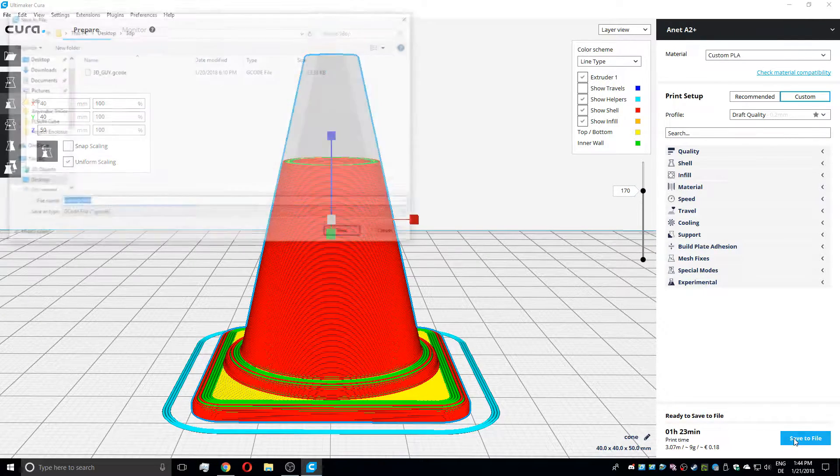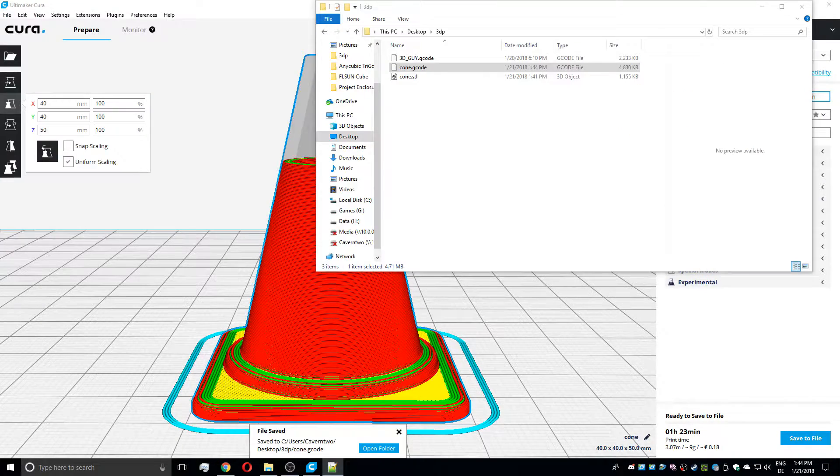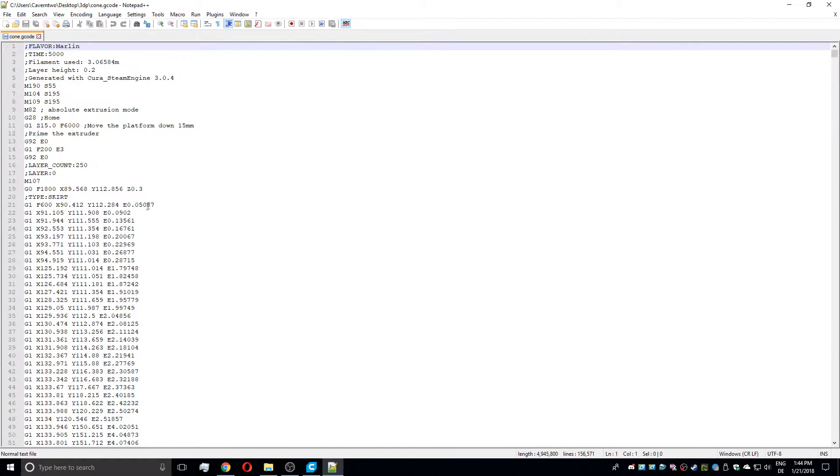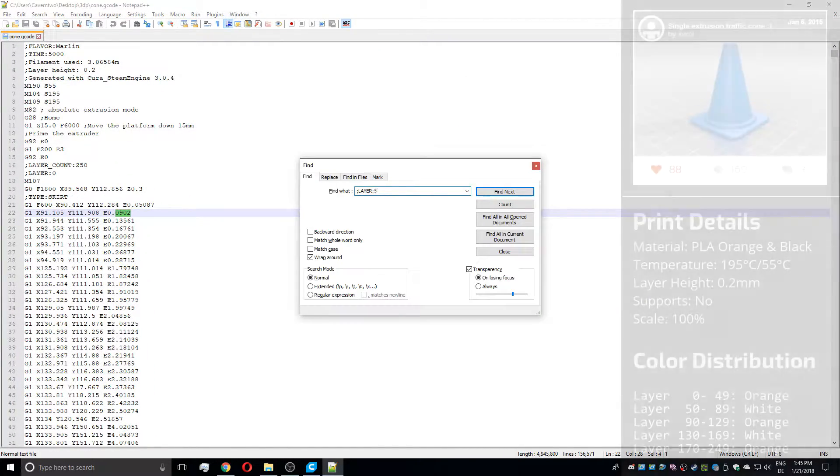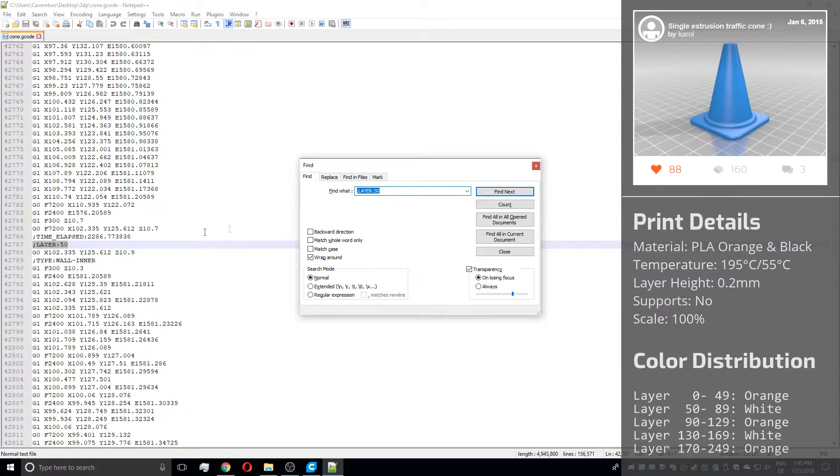Now let's save this sliced model as a file and open it up using a text editor like Notepad++. Search for semicolon layer colon and your layer number using the Ctrl+F menu and hit enter. You should end up anywhere deep in the file where the new layer starts.